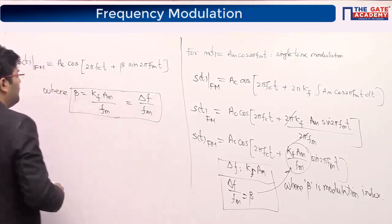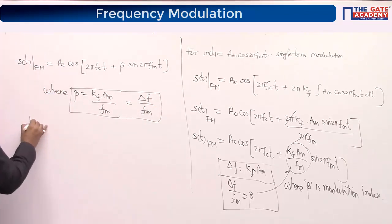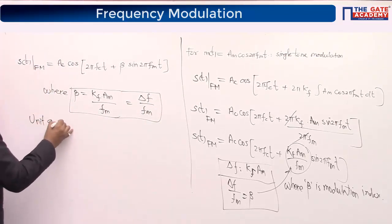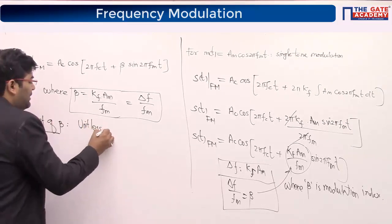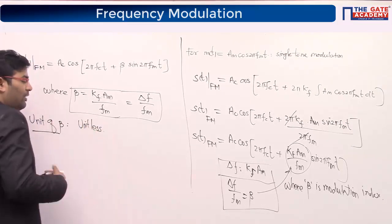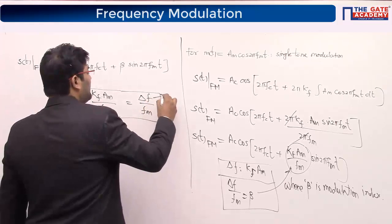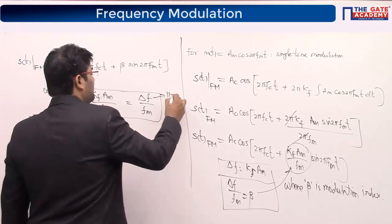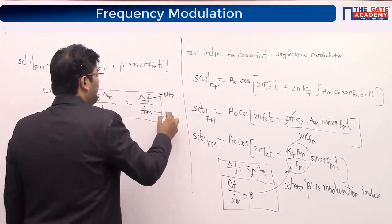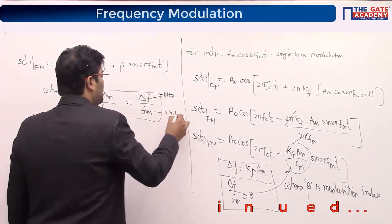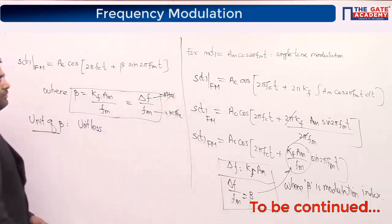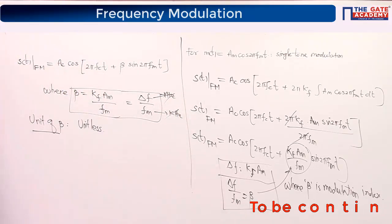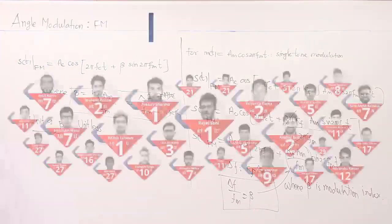The unit of beta is dimensionless — unitless. Why? Because frequency deviation is in Hz or kHz, and fm is also in Hz or kHz; they cancel each other, leaving no unit. So beta has no unit.